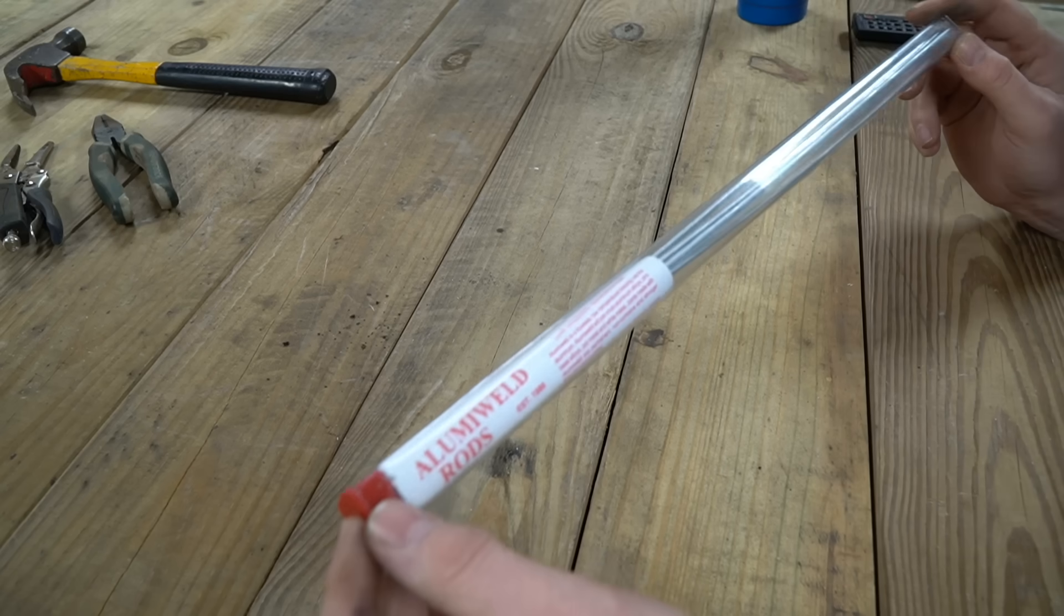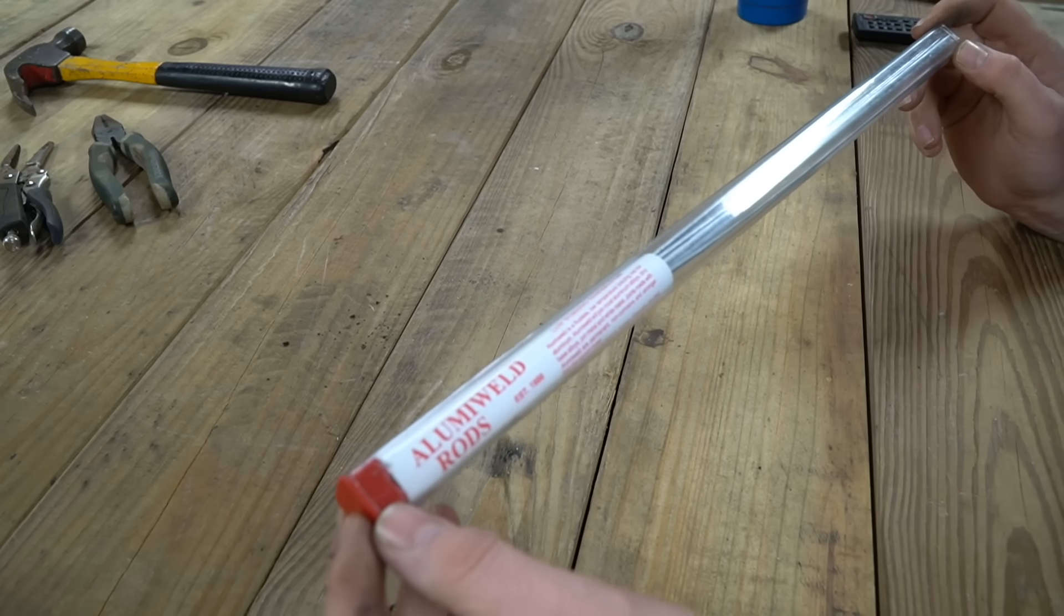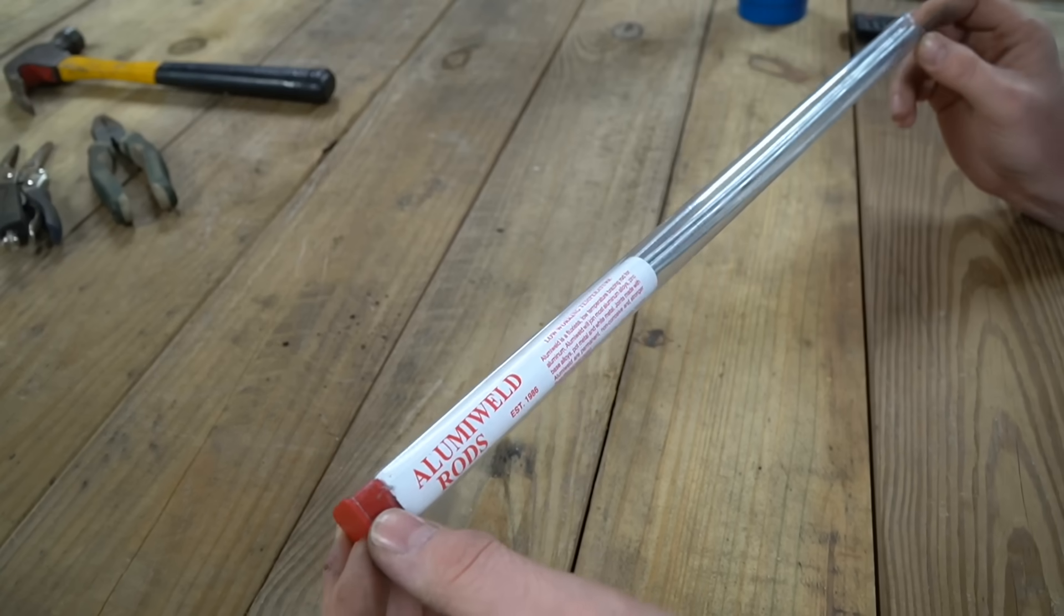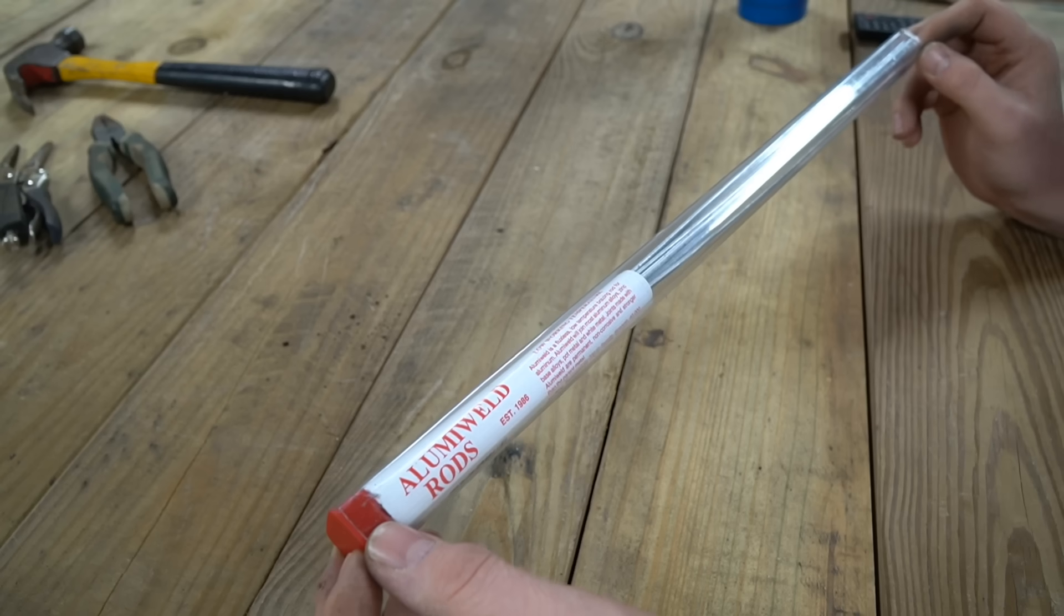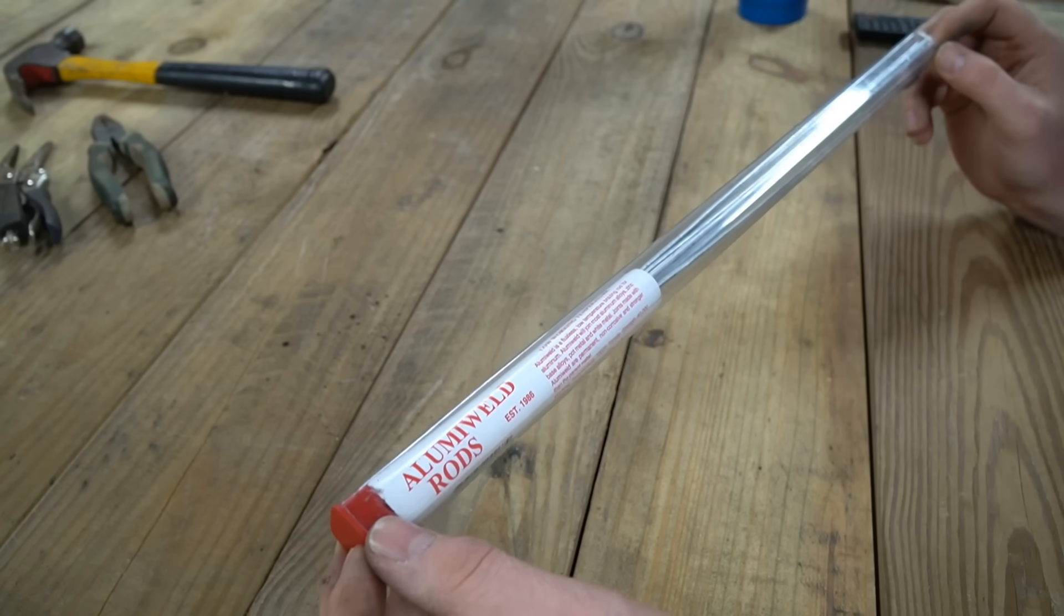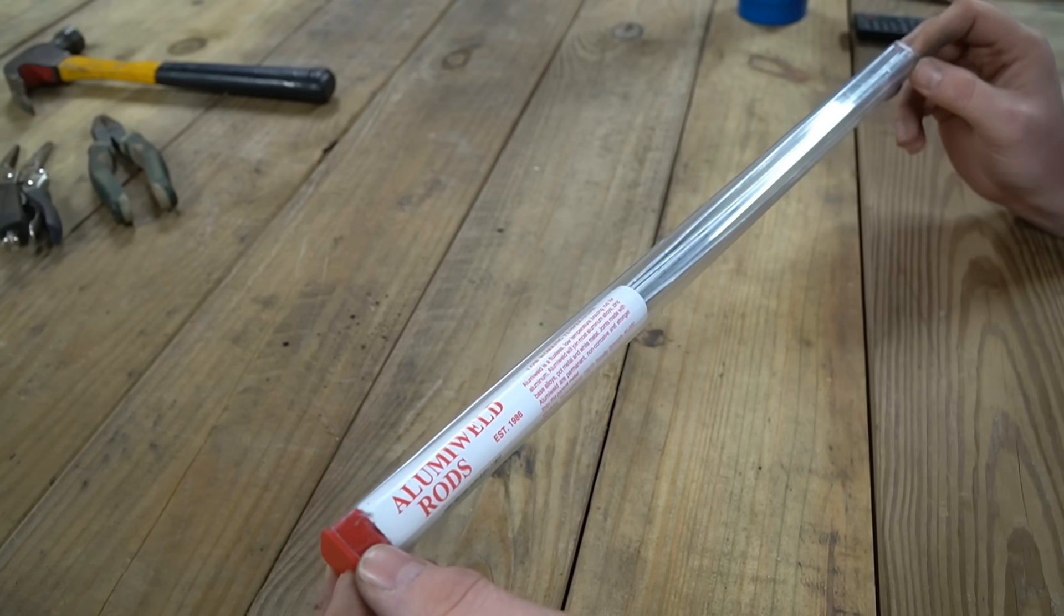So you can see it's kind of like soldering in a way, but we call it brazing. And the tensile strength of this particular material, at least these rods, is 40,000 PSI. So what that means is your weld is going to be a lot stronger than the material that you're sticking together.